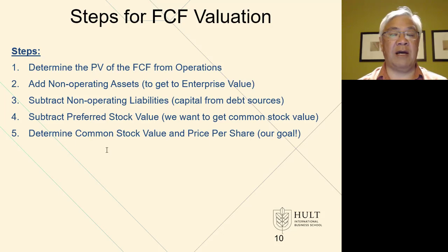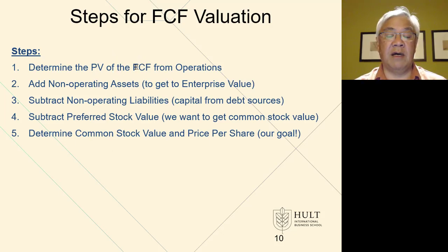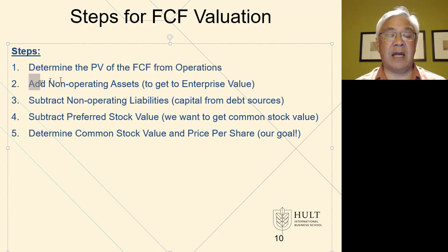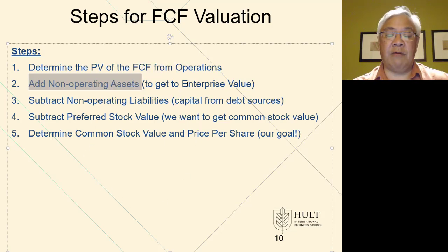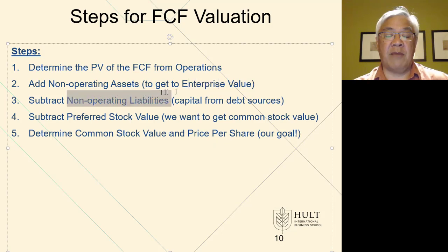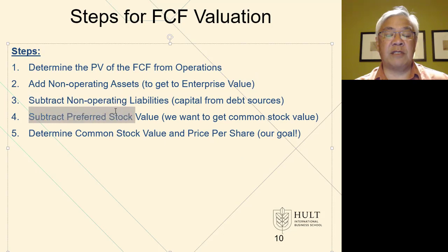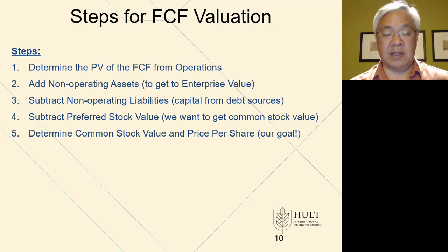These are the five steps to derive the valuation. We start with the free cash flow from operations. Then we add back non-operating assets, which are marketable securities, and that gets us to what we call an enterprise value. Then we subtract out non-operating liabilities, which are capital from debt sources. Then we further subtract preferred stock, and we end up with common stock.